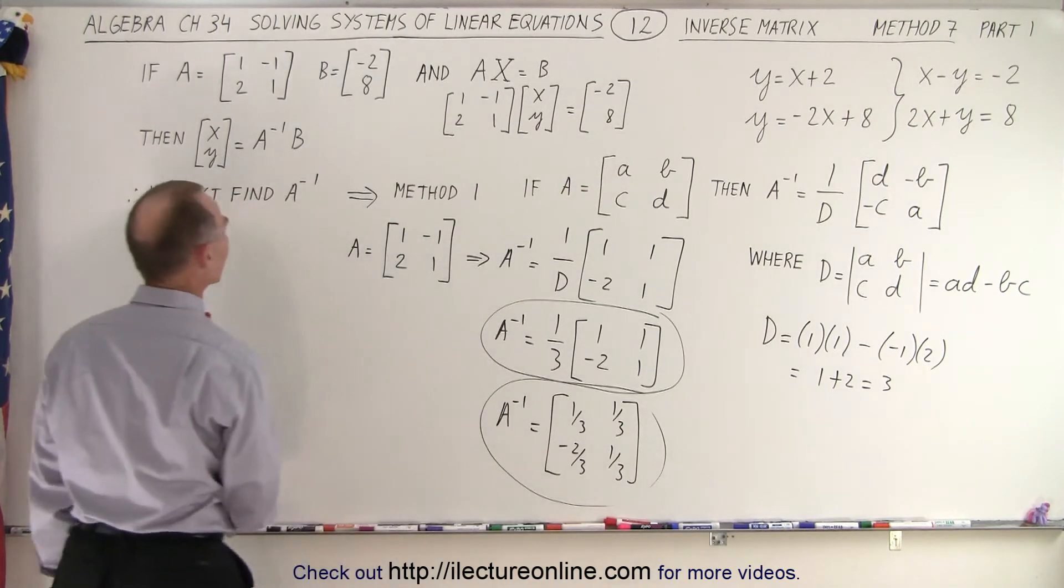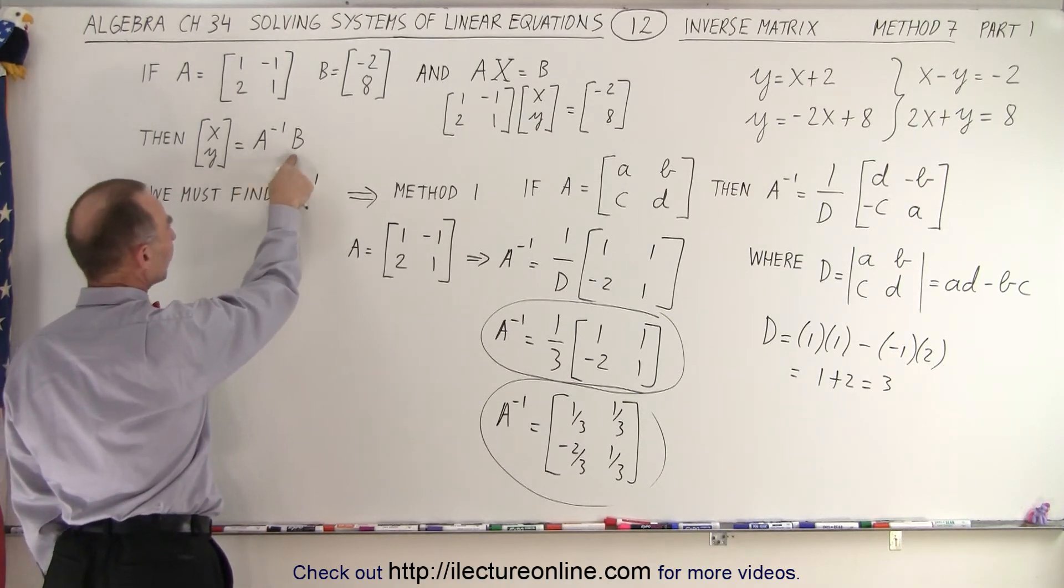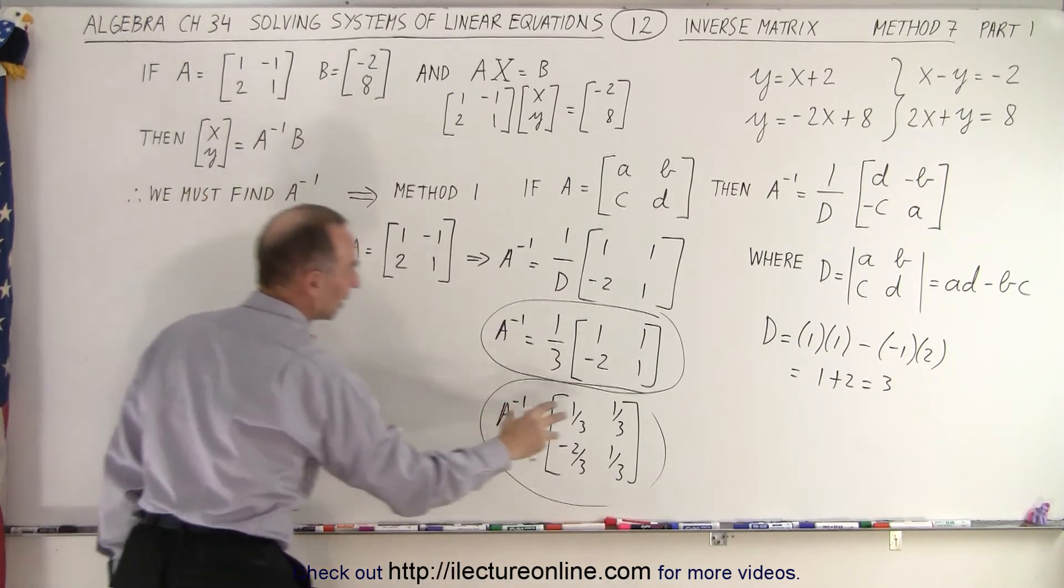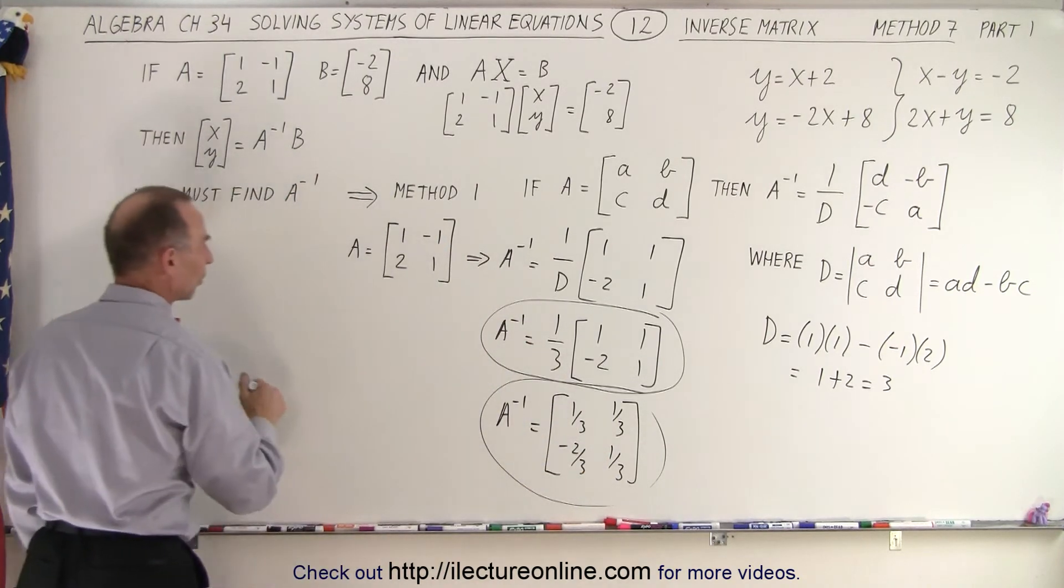Where is it? Where did I go here? There we go. Yeah, the inverse matrix, A negative 1 times B, which is simply this matrix times the B matrix, which is this.